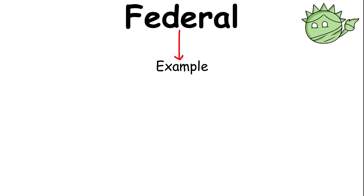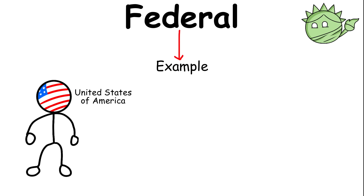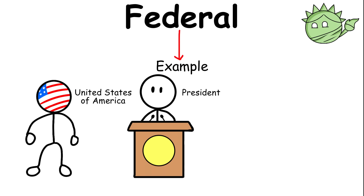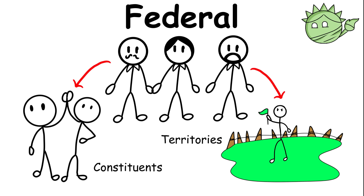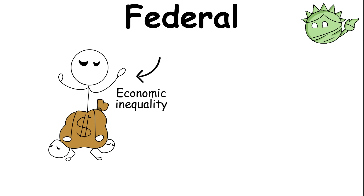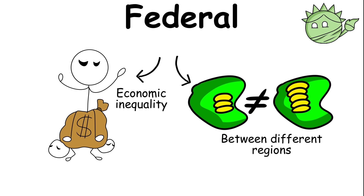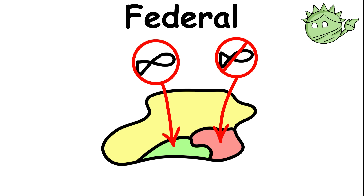The most common example of a federal government is the United States of America, which is under the leadership of a president, but has different state senators that manage their territories and constituents. One of the biggest drawbacks of a federal form of government is the possible economic inequality between different regions, because some territories have better access to certain resources that other territories can't have access to.